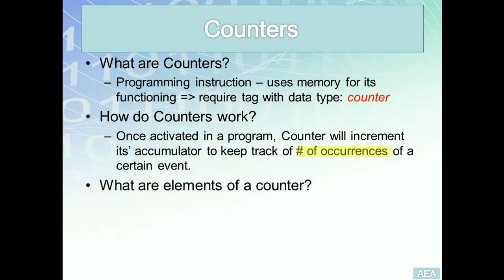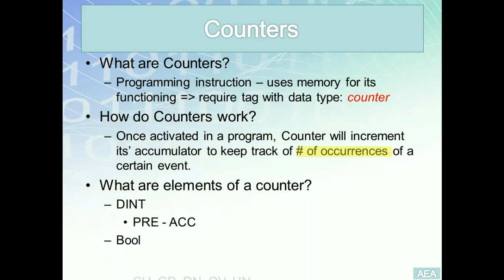The elements of the counter fall into two categories: double integer — which includes the preset and accumulator values — and boolean, which includes the CU bit, CD bit, down bit, overflow bit, and underflow bit. In order to successfully integrate a counter into our program, we have to have an adequate understanding of these elements and parameters.